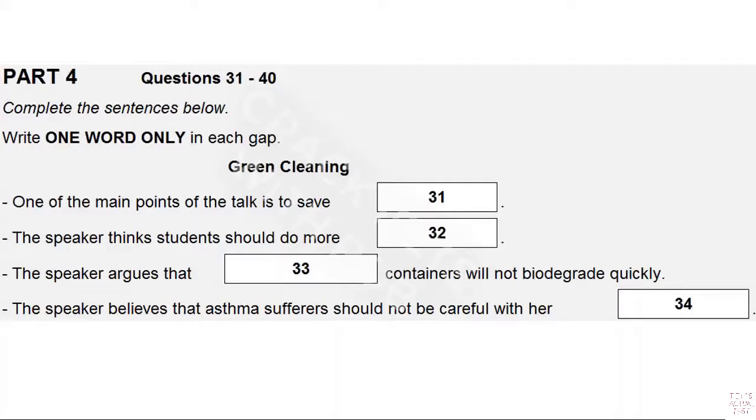The actual recipes are on handouts you can take at the end of the talk. The sorts of ingredients I'm referring to are things like bicarbonate of soda, eucalyptus oil, ammonia, vinegar, lemons, pure soap.